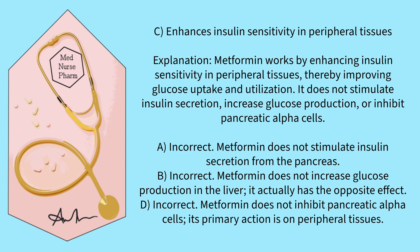Enhances insulin sensitivity in peripheral tissues. Metformin works by enhancing insulin sensitivity in peripheral tissues, thereby improving glucose uptake and utilization. It does not stimulate insulin secretion, increase glucose production, or inhibit pancreatic alpha cells.